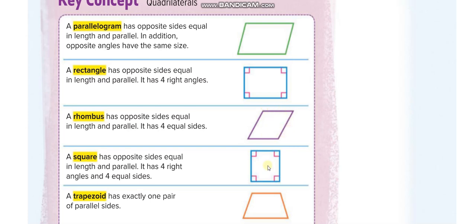A square is like both a rhombus and a parallelogram — opposite sides are equal in length and parallel. Like a rhombus, all four sides are the same length. Additionally, like a rectangle, it has four right angles. So whenever you see a square, you can call it a rhombus, a parallelogram, or a rectangle.